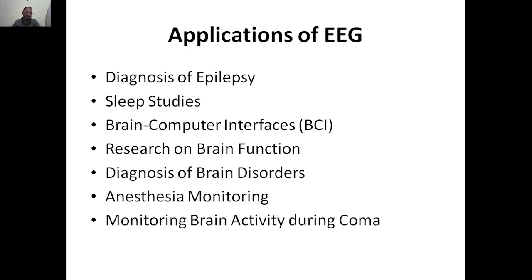Next is monitoring brain activity during coma. If a person is in a coma, EEG is used to understand whether the brain is active or not, whether it is functioning or not. Coma is a complex concept and a lot of research is ongoing to understand it better. But the activity of the brain can be checked using EEG.